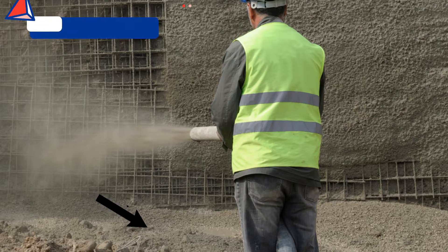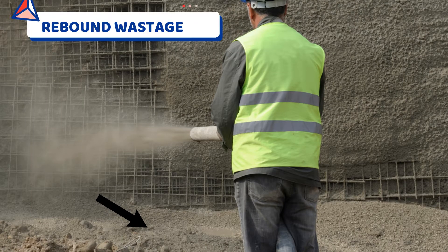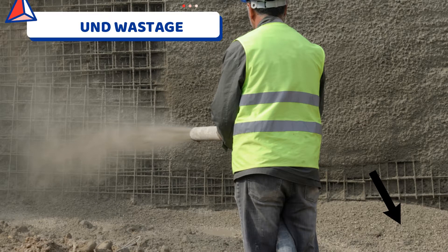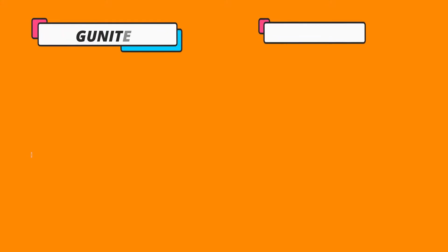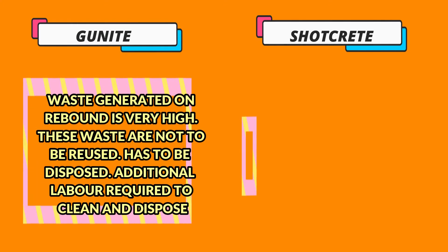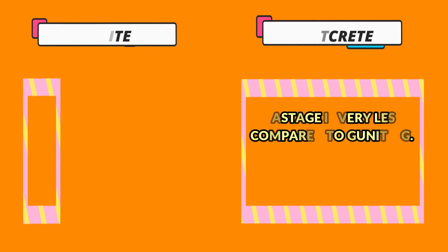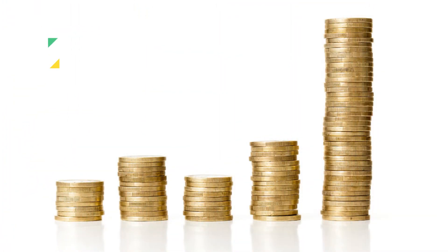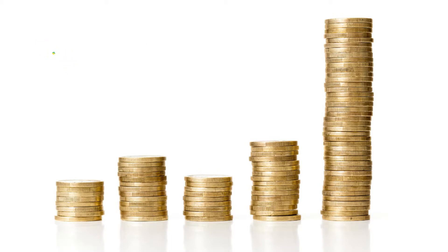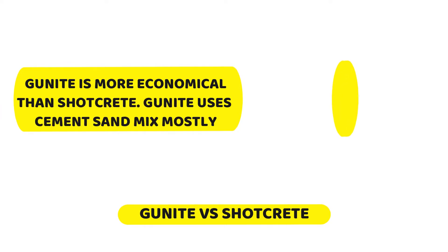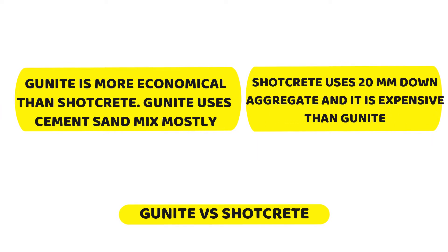Next is rebound wastage in the case of gunite and shotcrete. The waste generated on rebound is very high in the case of gunite. These wastes are not to be reused, and labor is required for cleaning. Next is economy. Gunite is more economical than shotcrete. Gunite uses only a cement and sand mix mostly, but shotcrete uses 20mm aggregate and is much more expensive than gunite.